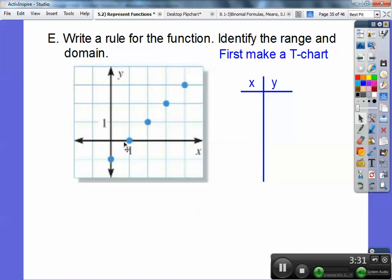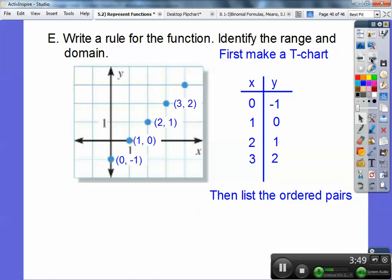This one, I go over to the right, 1, and up 0. So this one would be 1, 0. This point right here is to the right, 2, and up 1. So that would be 2, 1, and so on. So here we go. Then list them as ordered pairs. So there's that one, 0, negative 1. Then the next one would be 1, 0. The next one would be 2, 1. The next one would be 3, 2. And then finally, 4, 3.